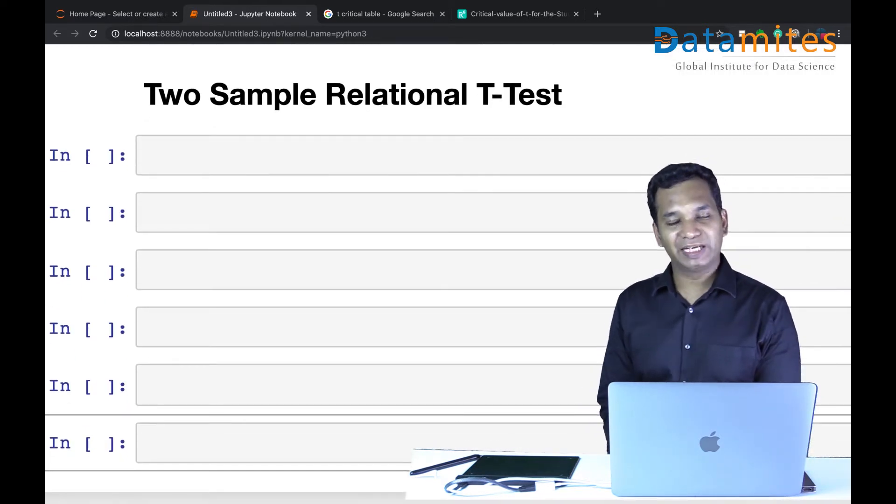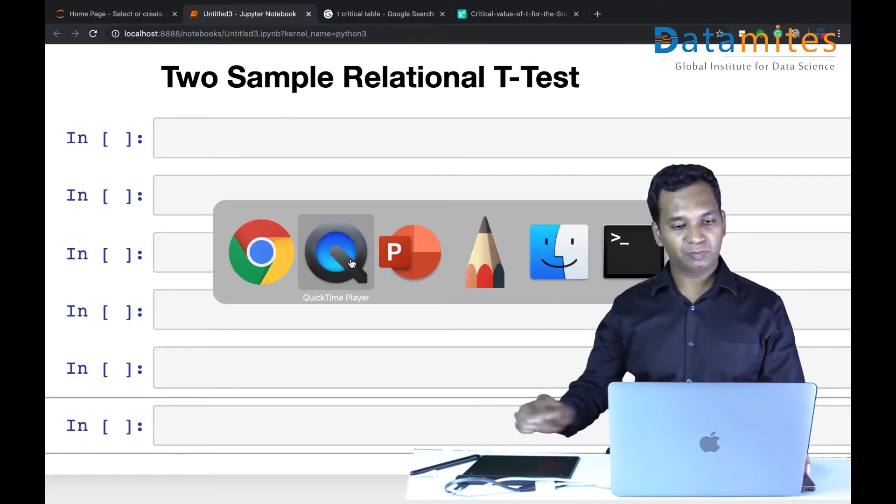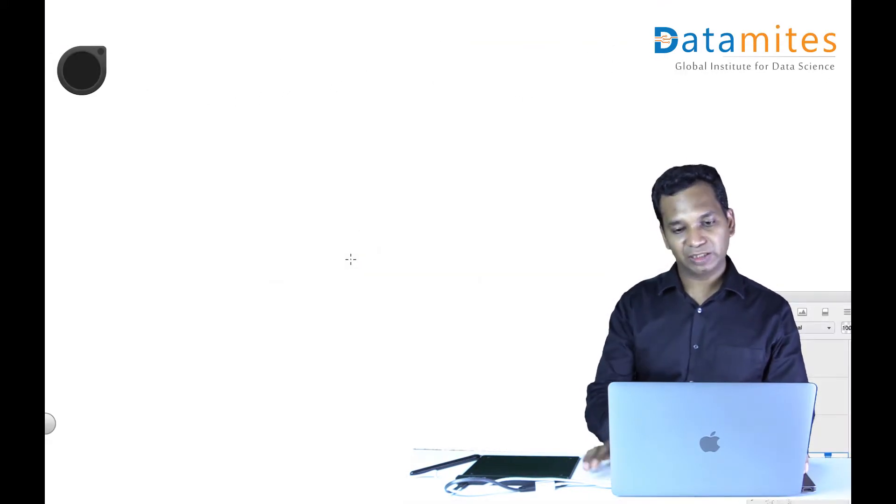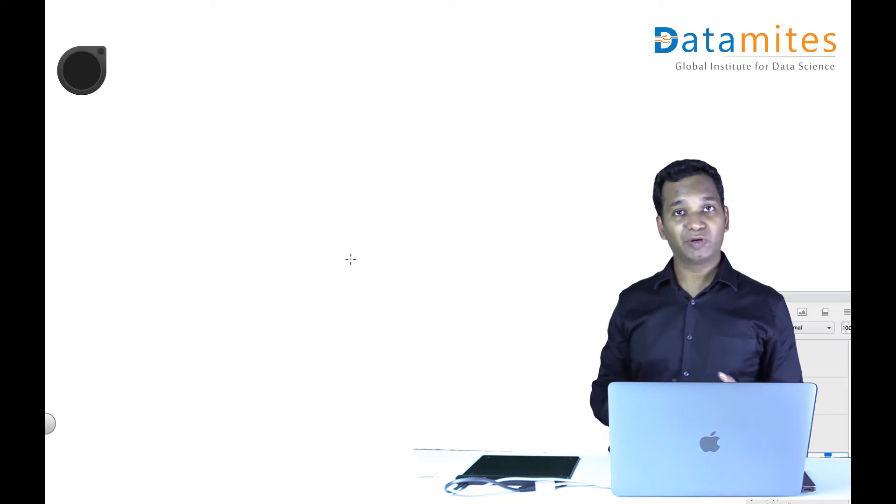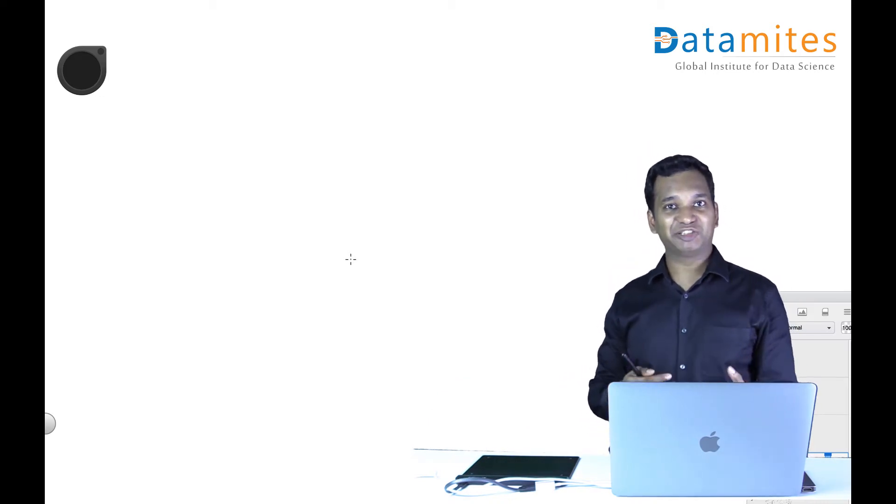Two-sample relational t-test. I'll assume two samples again, so two data distributions. For example, let's take an example of Red Bull energy drink. Well, it's not really an energy drink, it's high caffeine which cheats your brain to make you a bit active.